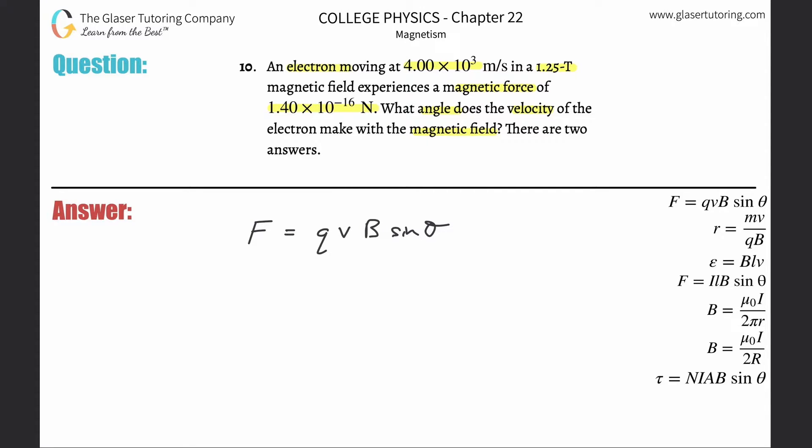So how do I find theta? Well, I got to know all these four variables, and it turns out that we do. So I'm going to divide out the QVB, and we get a nice little formula here. Now, let's just plug in our values and let's get an answer.